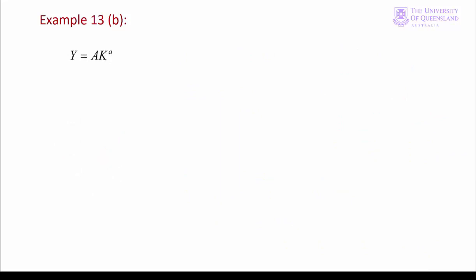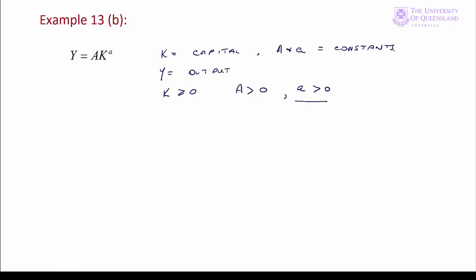In this example we have a simple production function. k is the amount of capital used in the production process, y is the output, and uppercase A and lowercase a are positive constants. We have no labour in this production function. With k greater than or equal to zero, the first derivative y prime equals A times a times k to the power a minus 1. The second derivative equals A times a times (a minus 1) times k to the power a minus 2.